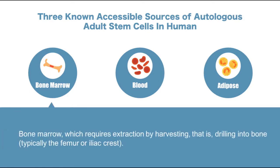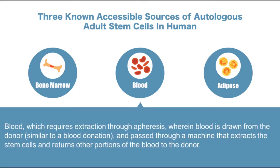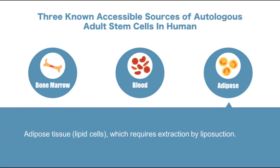First, bone marrow — it requires extraction by harvesting, that is, drilling into bone, typically the femur or iliac crest. Second, apheresis, wherein blood is drawn from the donor and passed through a machine that extracts the stem cells and returns other portions of the blood to the donor. Third, adipose — it requires extraction by liposuction.